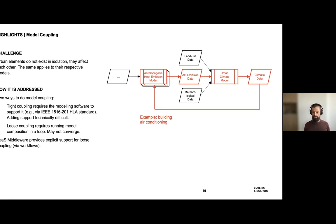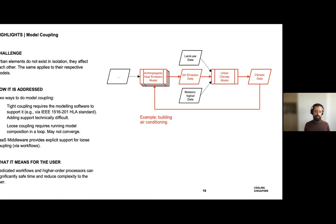Loose coupling, on the other hand, doesn't require touching the model software. You can treat the models as a black box, but you end up running things in a loop until you reach convergence — and there's no guarantee of convergence. Model coupling is not easy, but there are different ways of doing it. Loose coupling is directly and explicitly supported by the SaaS middleware. Tight coupling requires support by the underlying modeling software, but the SaaS middleware doesn't prevent you from doing it. You can have dedicated workflows and higher-order processes that take care of the looping part.